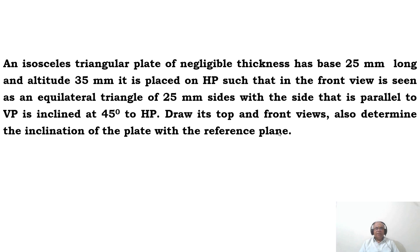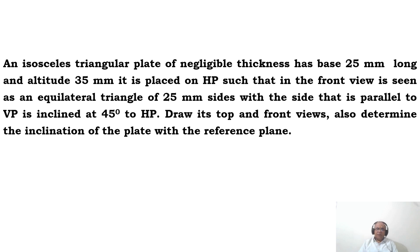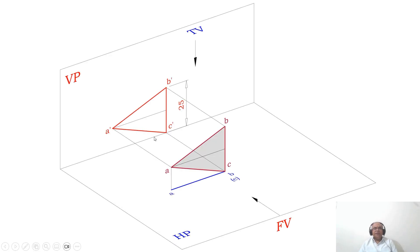Also determine the inclination of the plate with the reference line. Since the front view is seen as an equilateral triangle, we obviously have to start the problem from the front view, not from the top view. It is placed on HP, meaning one of the edges or points is resting on HP. The side which is parallel to VP is inclined at 45 degrees to HP — the true inclination is given in the third position.